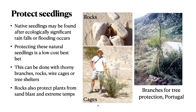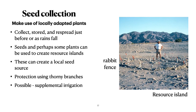Cages are expensive, and if a plant grows into the cage, it becomes a challenge getting the cage off the plant — we had to do quite a few cageectomies on this particular project. You can use natural materials for protection, as we see in this picture from Portugal. Although you don't often get a chance at low cost to collect seed and spread it, it's worthwhile if you can do it. If you collect from the site nearby on similar exposures and elevations, you can make use of locally adapted plants.